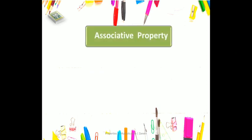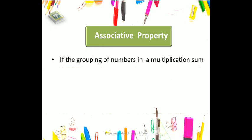Associative property of multiplication states that if the grouping of numbers in a multiplication sum is changed, the product remains the same.